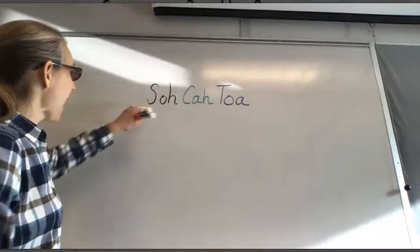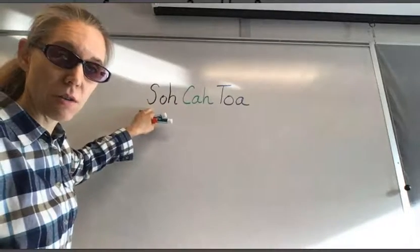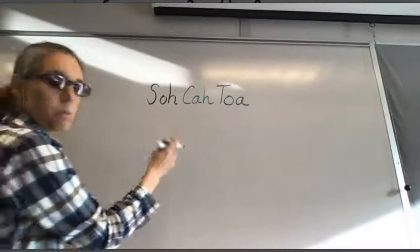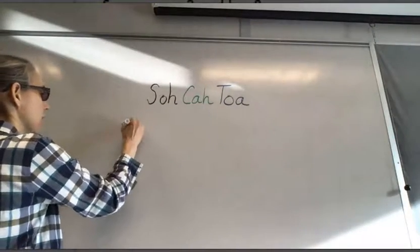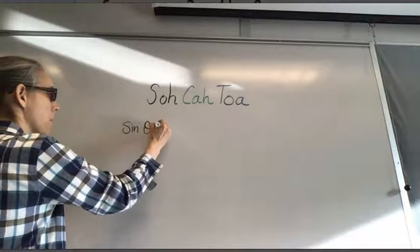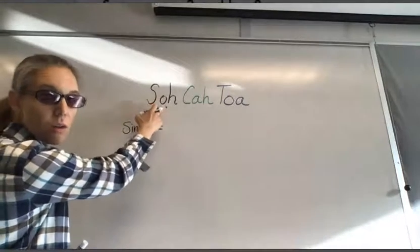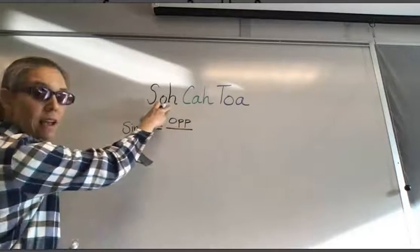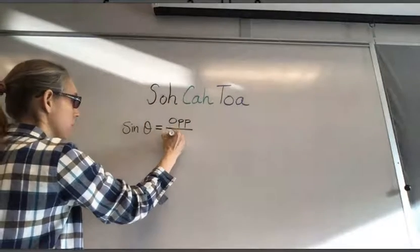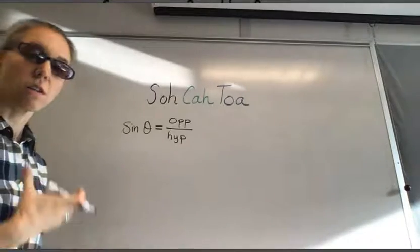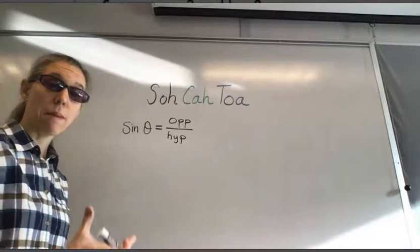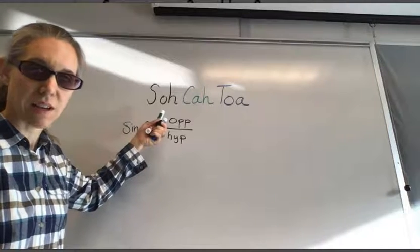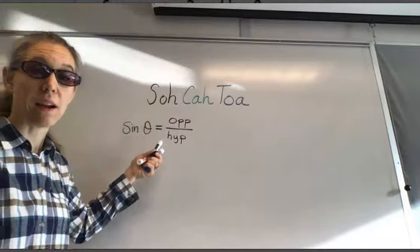SOHCAHTOA. The S in SOHCAHTOA means sine — the sine function. SOH means sine of some angle, where O means opposite and H means hypotenuse. So from SOH, we can remember that the sine of theta is equal to the opposite side divided by the hypotenuse.